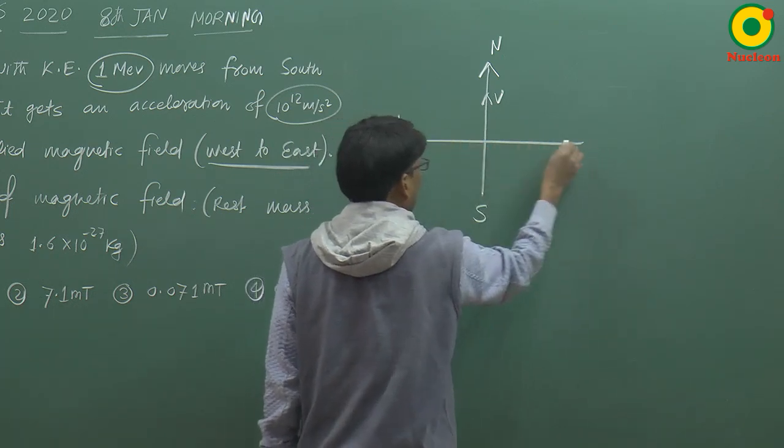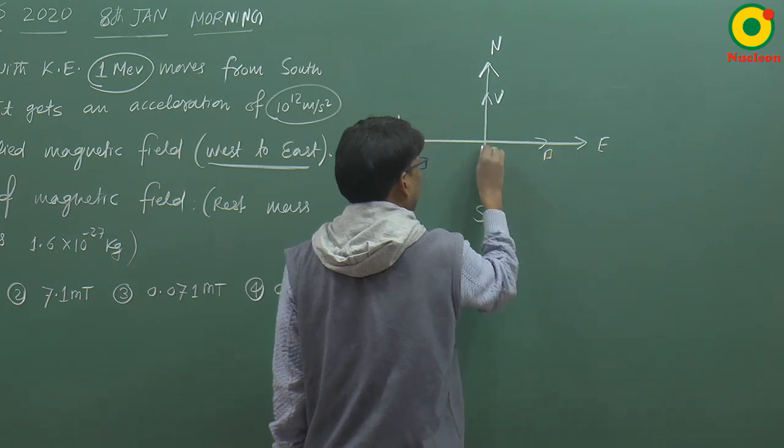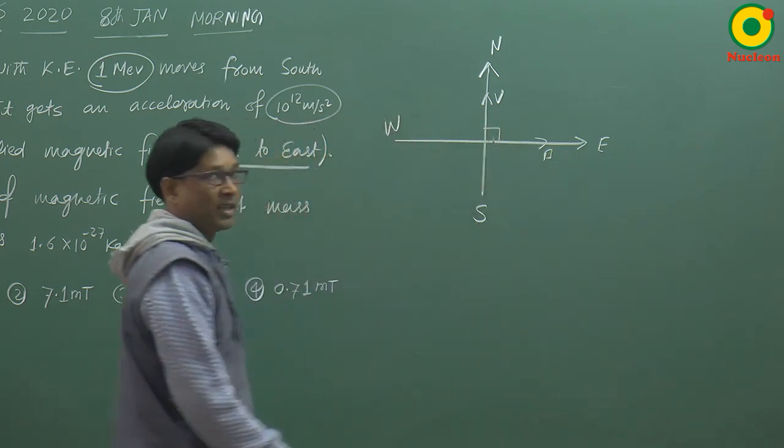Magnetic field joh hai, wo west se east ki taraf hai. Magnetic field idar hai, V idar. Donoh ke bici ka angle hai 90 degree.